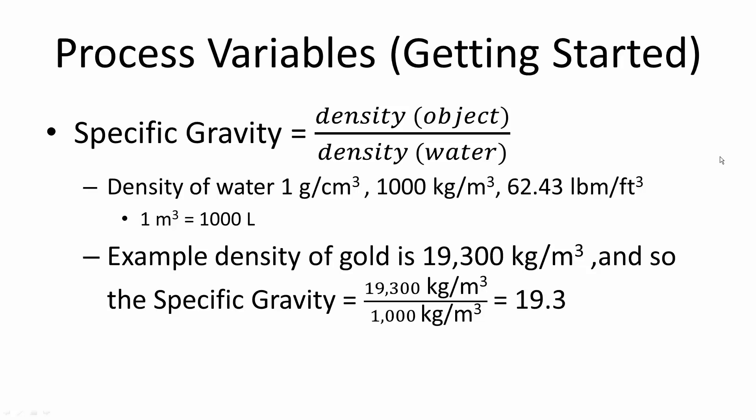In this getting started video, we will go over process variables. Specific gravity is equal to the density of an object divided by the density of the reference object, which is typically water.